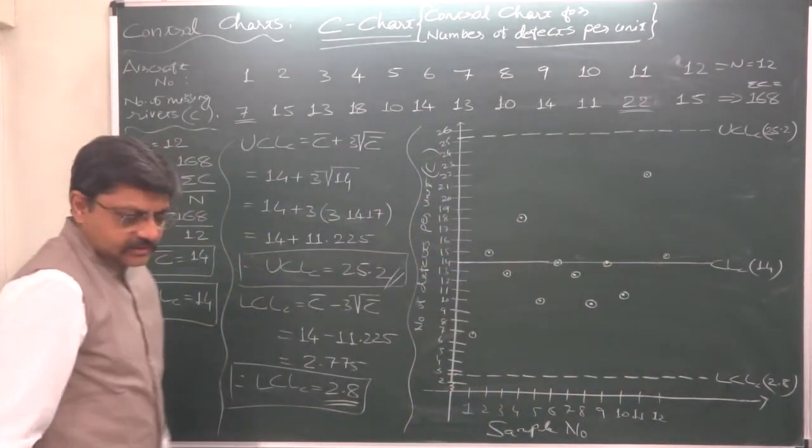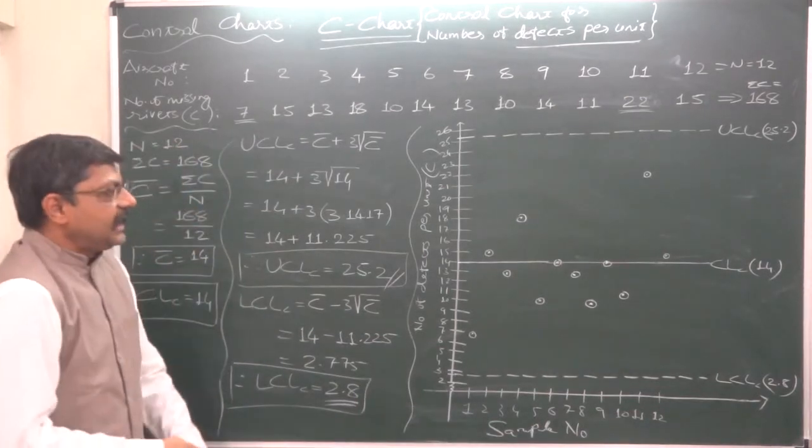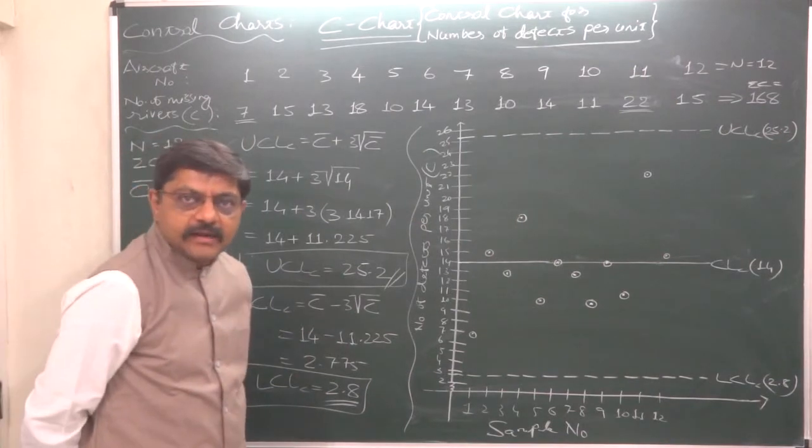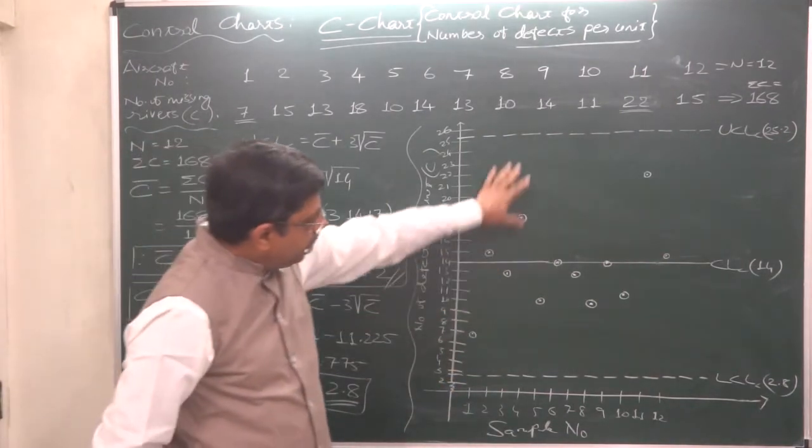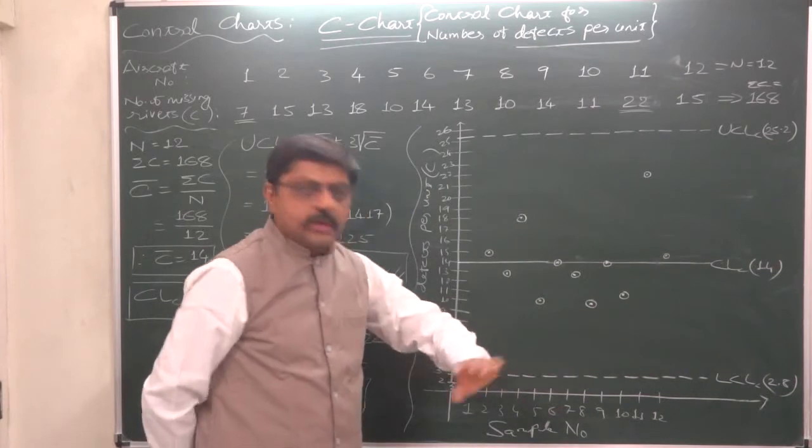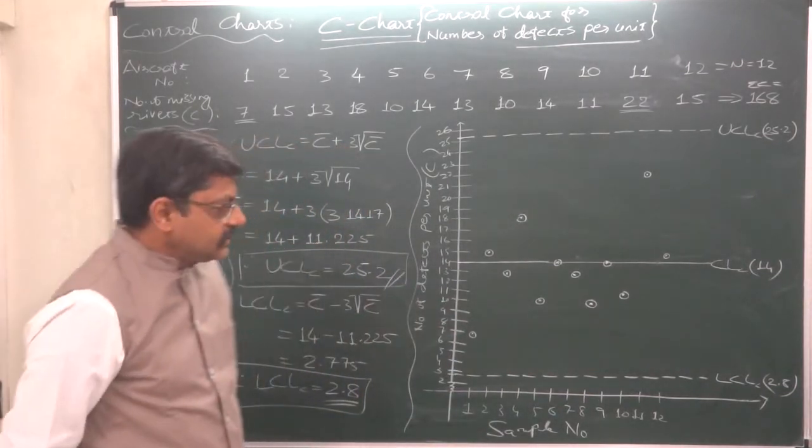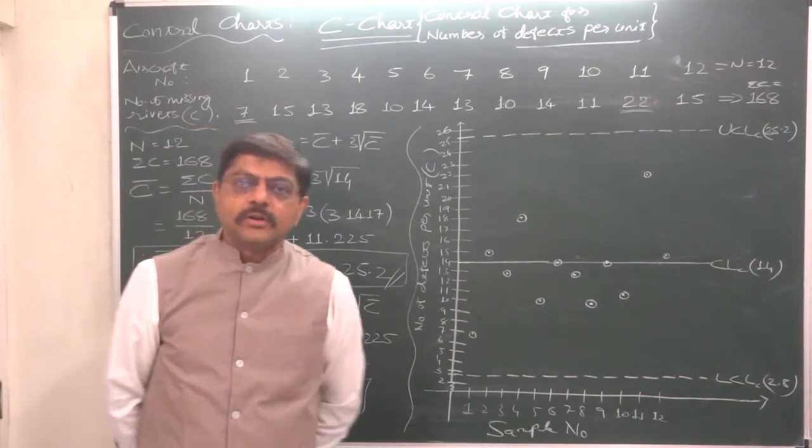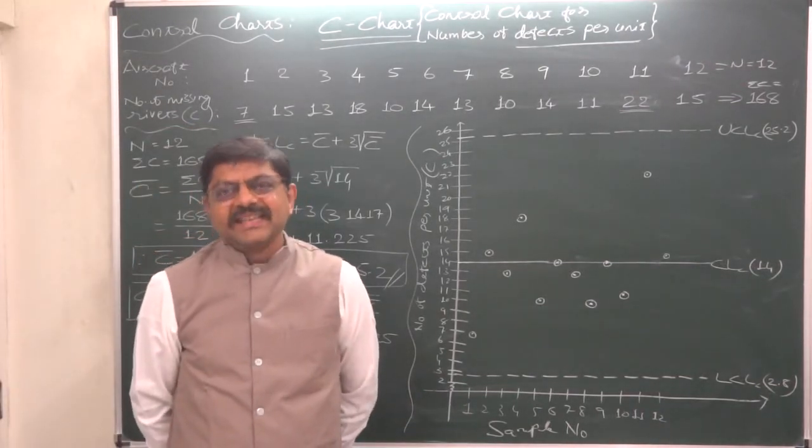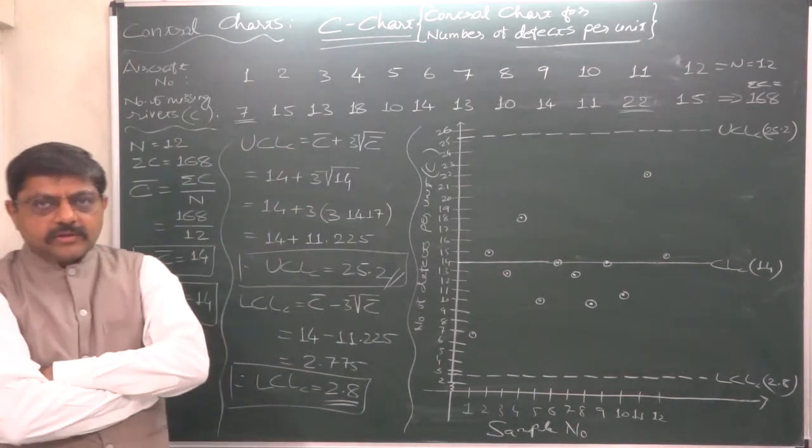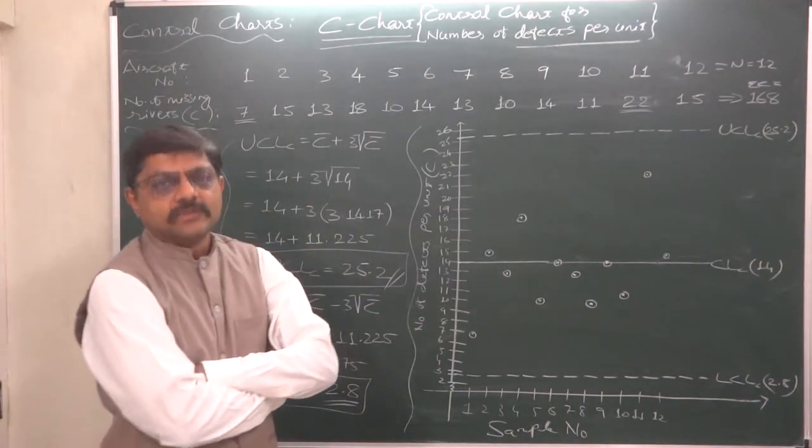In our discussion on control charts, it happens very first time that all the sample points are within upper control limit and lower control limit. So in our series of lectures, we first time conclude that the process is under control statistically.